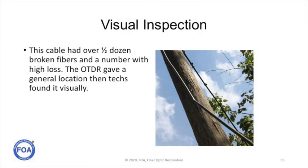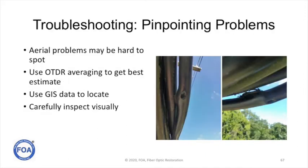Visual inspection will also show you problems when nothing else will. This is a cable that had damage — it was shown on an OTDR, but it wasn't obvious where the damage was until somebody looked up the pole and saw the kink in the cable. Damage in aerial cables can also be hard to find, and you're probably going to need to send your tech out with a good pair of binoculars to literally physically inspect the area of the cable that you think is the problem, to find things like bullet holes or physical damage that may have been done by an installer putting another cable on the same messenger.